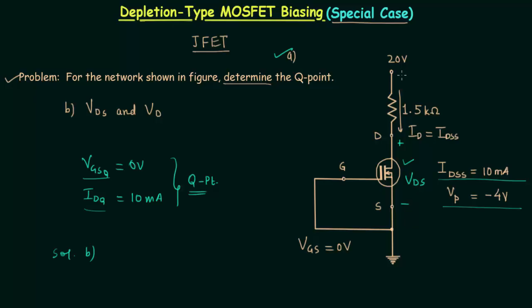So we will have 20V—that's VDD, the biasing potential. Then we subtract the drop across resistance 1.5kΩ. The drop equals ID multiplied by 1.5kΩ.